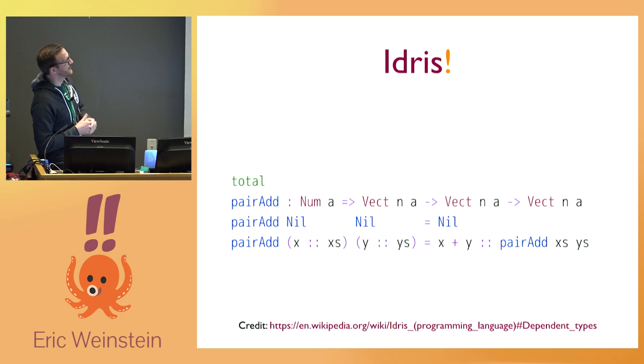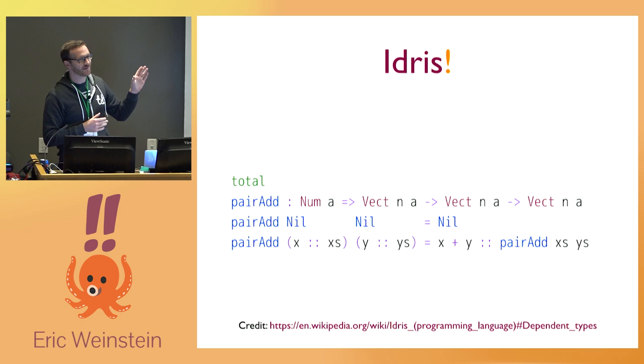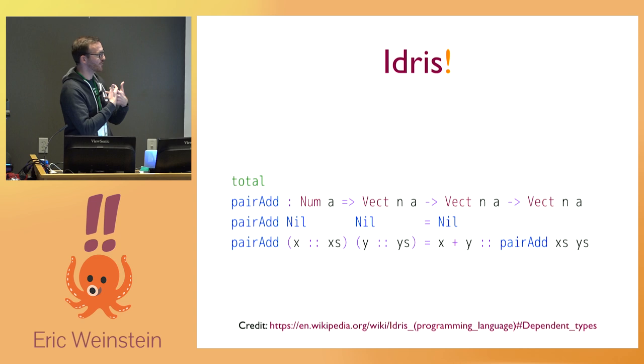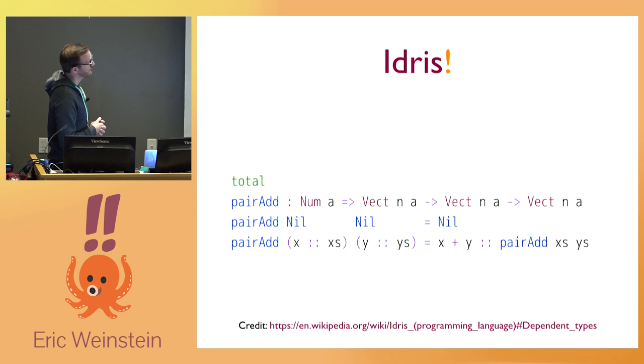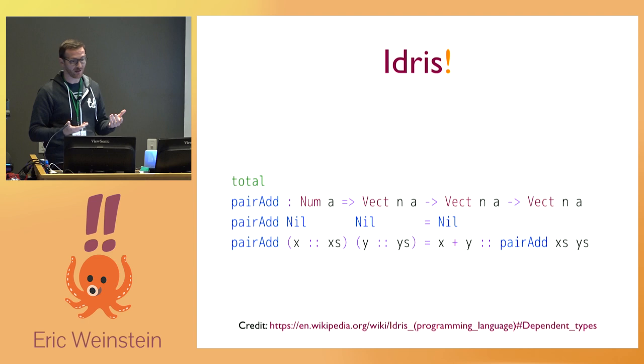What you're saying is: you have something that implements Numeric with a total ordering, a vector of n A's, and you take two vectors of length n of A's and get a vector of A's that is also of length n. The type system is telling you that if you add these two vectors pairwise, you will get another vector of the same type and the same length. pairAdd nil nil equals nil — if you take the head of the empty list you get nil. Otherwise, you take the head and rest of each vector, add those two elements together, and recursively do the same for the rest. It's astounding that the type system can tell you this.